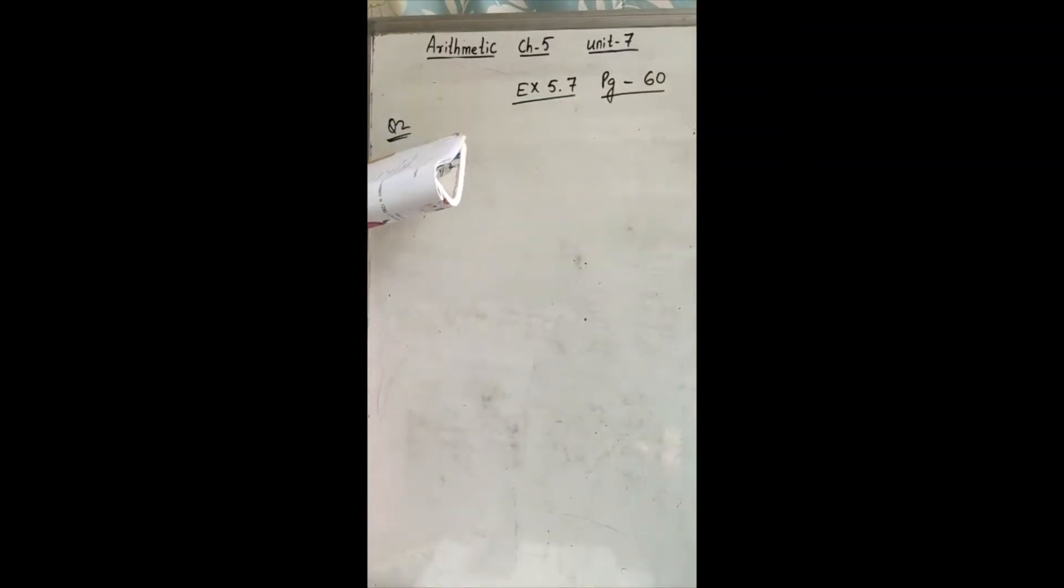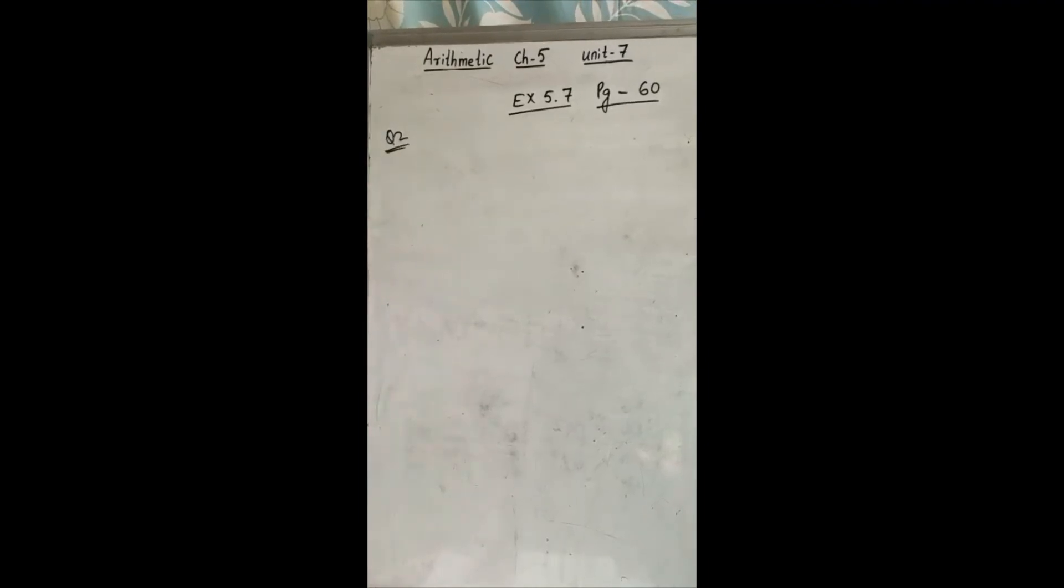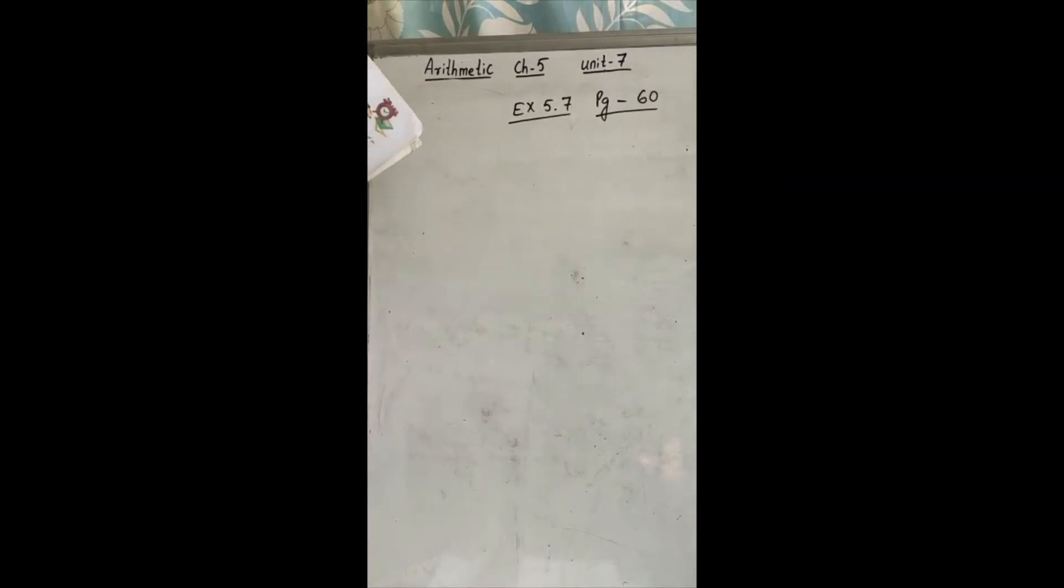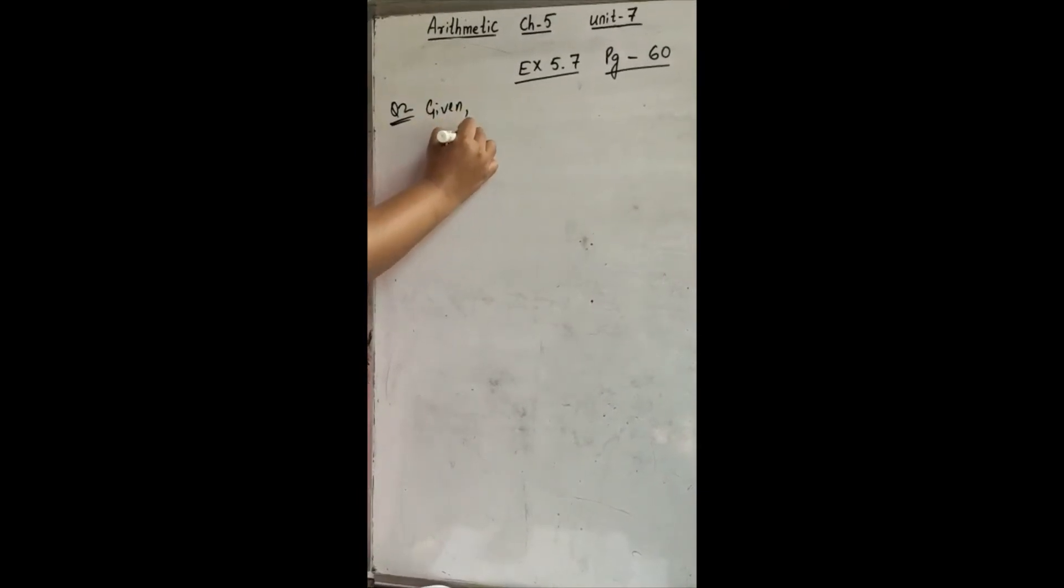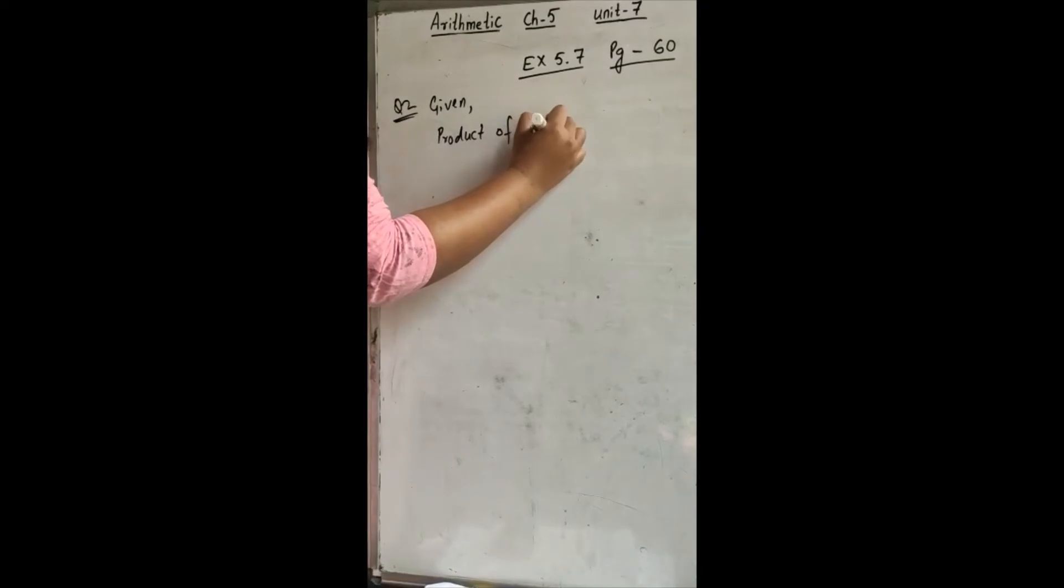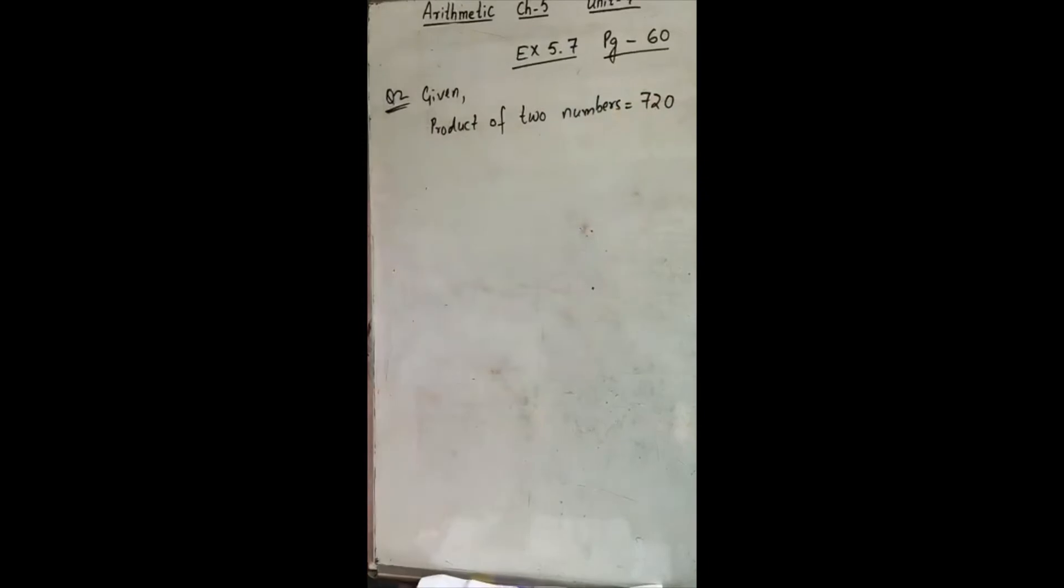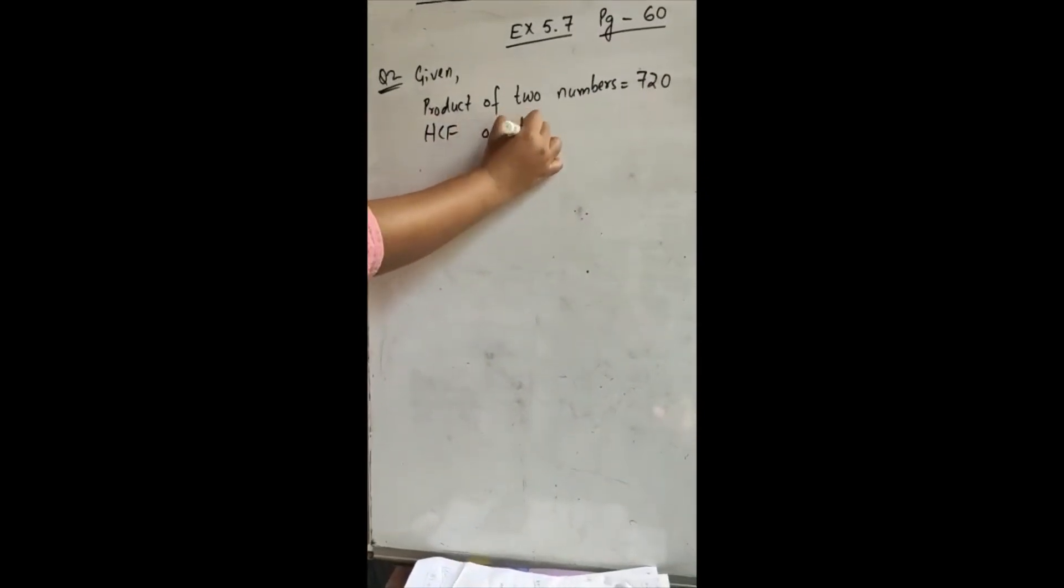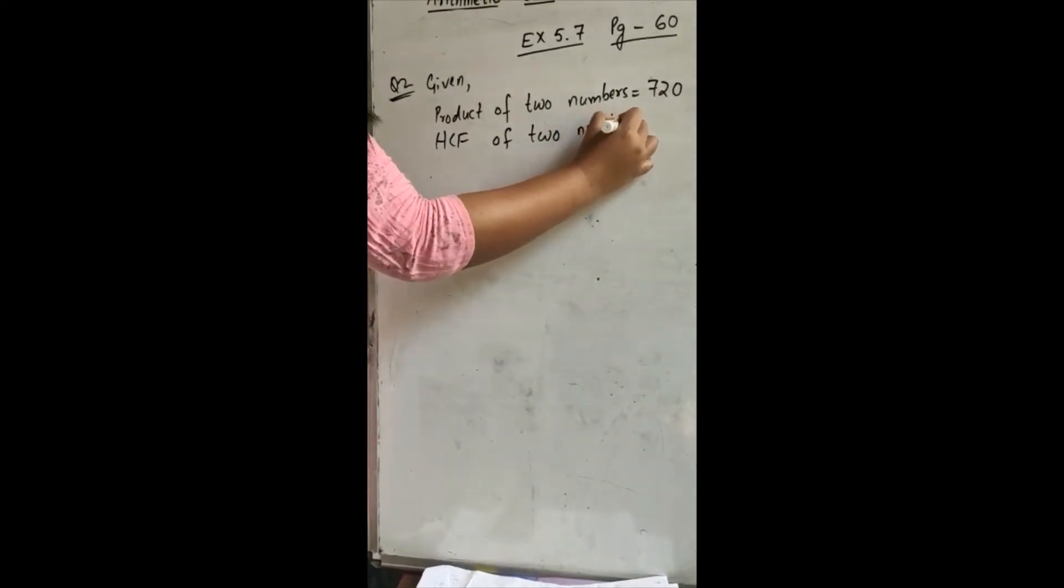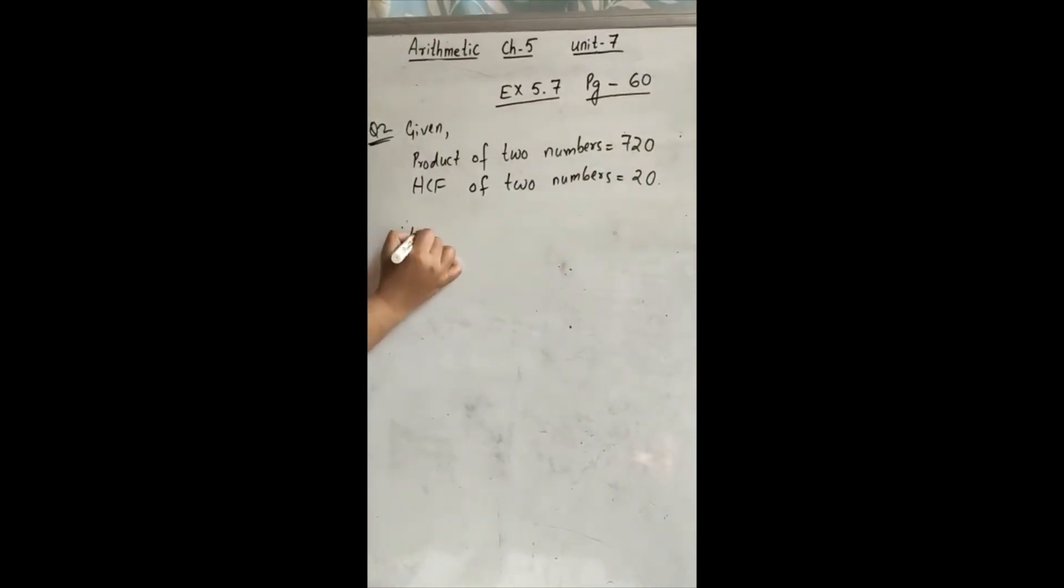Now read question number 2. Find the LCM. Here we have to find the LCM. If the product of two numbers is 720 and their HCF is 20. So here what is given? Product of two numbers. That is 720. Now HCF is also given. HCF of the two numbers. That is 20. Now they told us to find the LCM.